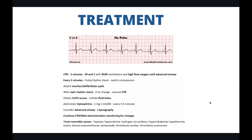Treatment for PEA is different from a shockable rhythm — PEA is not a shockable rhythm. Initiate CPR for two minutes, 30 and 2 with BVM ventilations and high flow oxygen until we get an advanced airway. Every two minutes, do a pulse and rhythm check, switching compressors, and get the monitor and defibrillation pads on after each rhythm check. If no change, continue and resume CPR. Obtain IV/IO access, initiate a fluid bolus, and administer epinephrine 1 milligram of 1 to 10,000 every three to five minutes. Consider and place an advanced airway with waveform capnography. Continue this cycle of CPR and med administration, monitoring for changes, and identify and treat reversible causes.